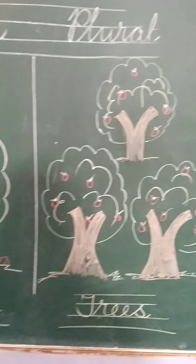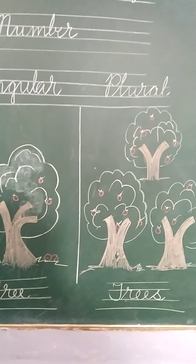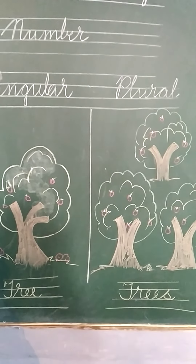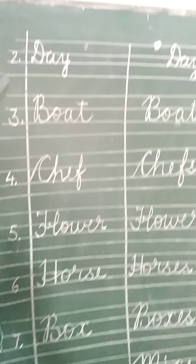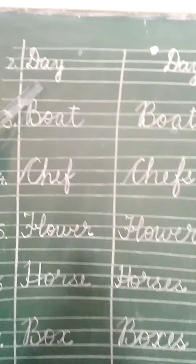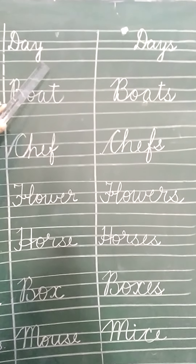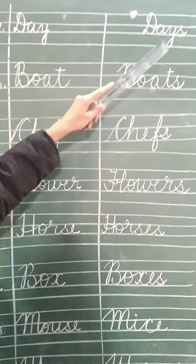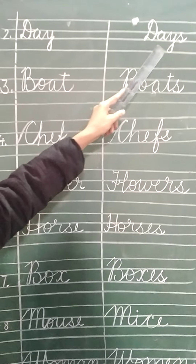We have to put S, ES, or IES to make a plural form. Our second word is 'day' — D, A, Y. Plural of day is days. We have to add S here, so it becomes plural.